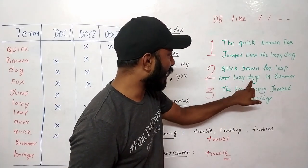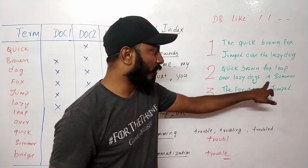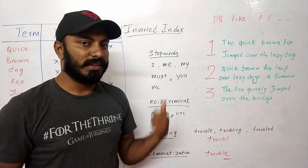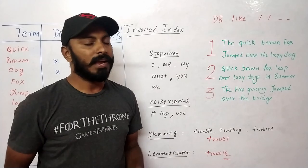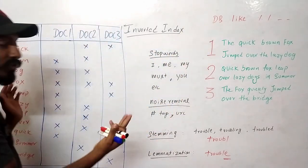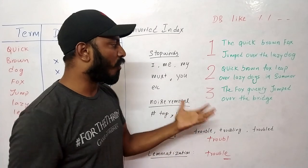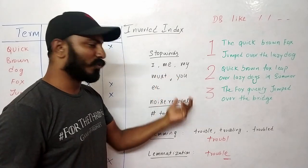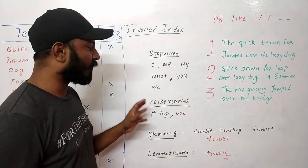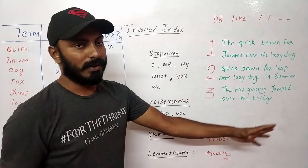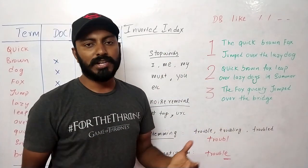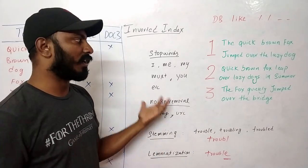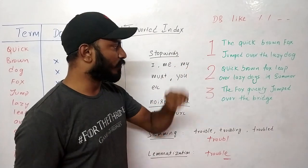Before we build the table, we have to do some preprocessing. First, we need to remove all the stop words. Stop words include: I, me, my, must, you, yours, ours, etc. There are libraries in every language — in NLP packages — where you tell which language you're working in, and they remove the stop words from the given document.